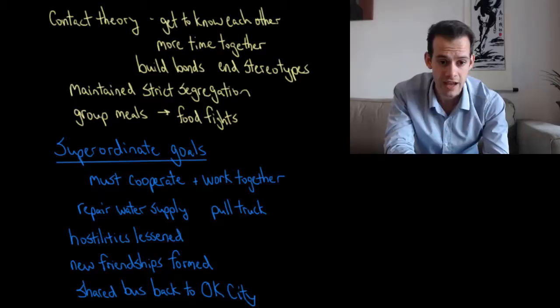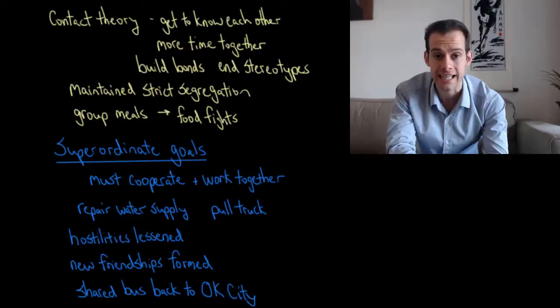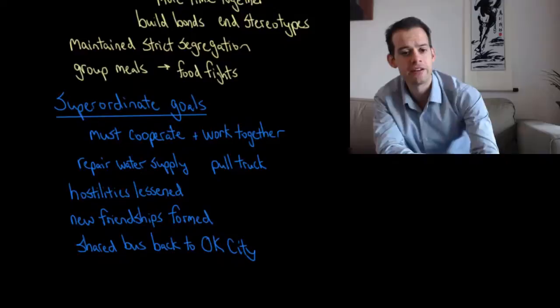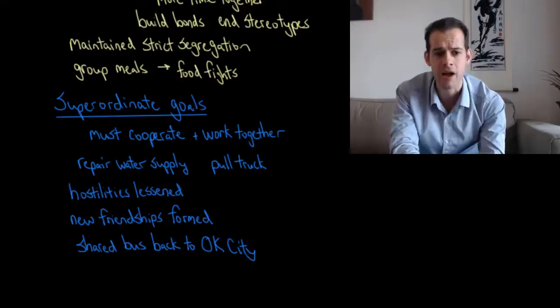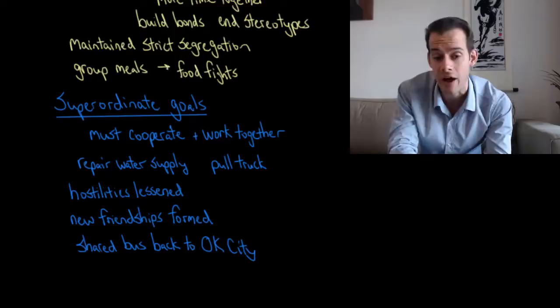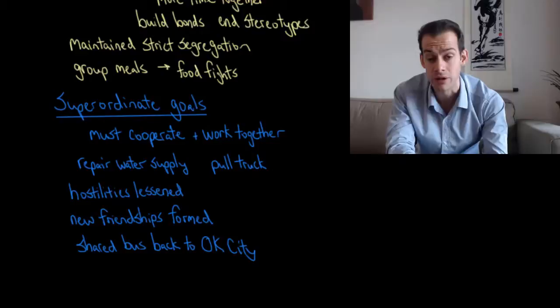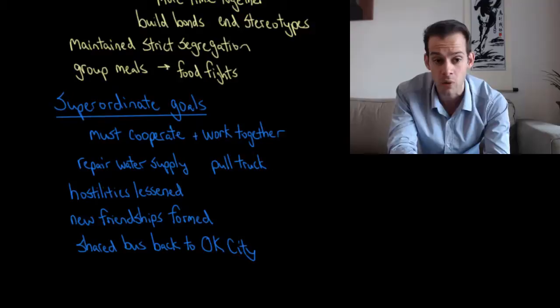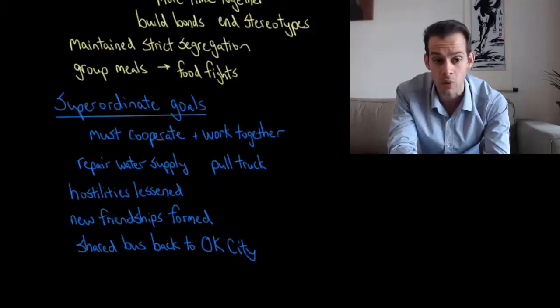What was successful was the creation of superordinate goals — goals where the boys had to cooperate in order to successfully reach them. The boys were given tasks such as repairing the camp's water supply, carrying piping and fixing broken parts, or working together to pull a broken-down truck that needed to be moved. The Eagles and the Rattlers now had to rely on one another and work together to complete the goal, which meant they had to get along at least during these tasks.